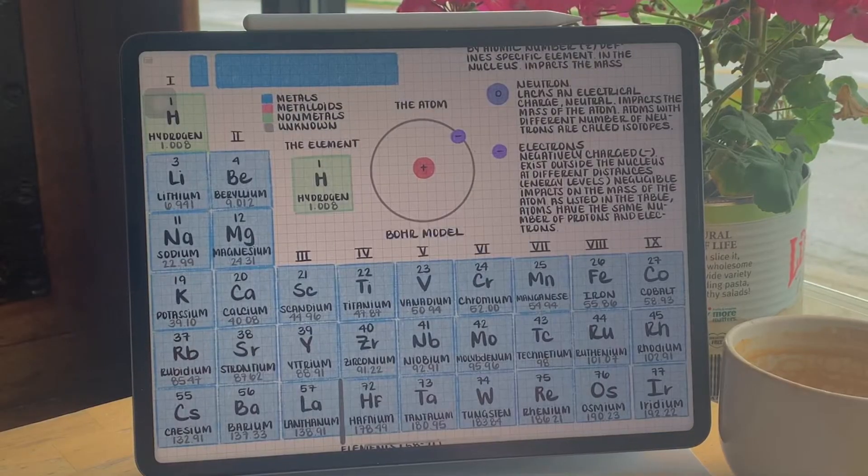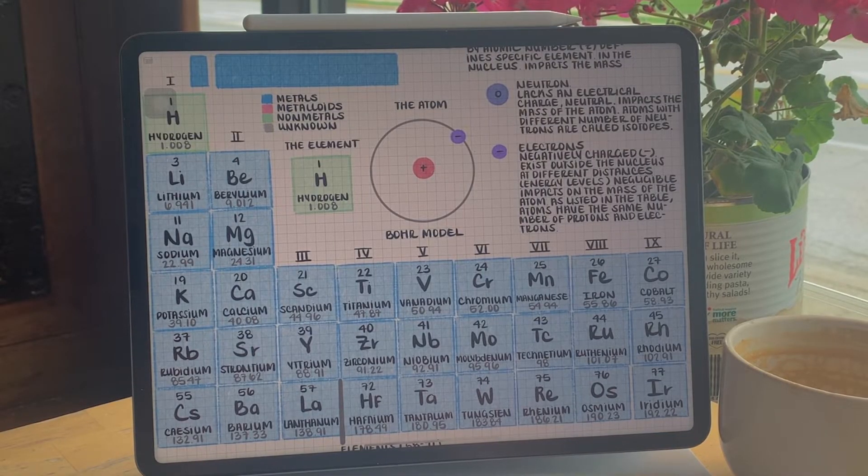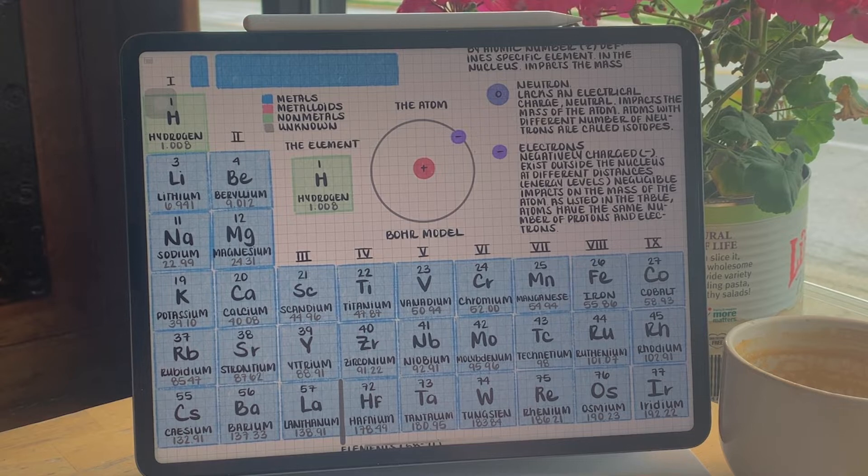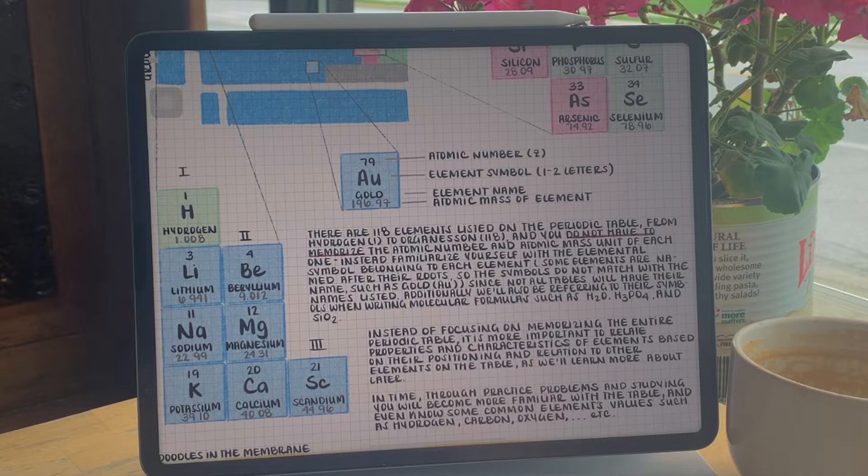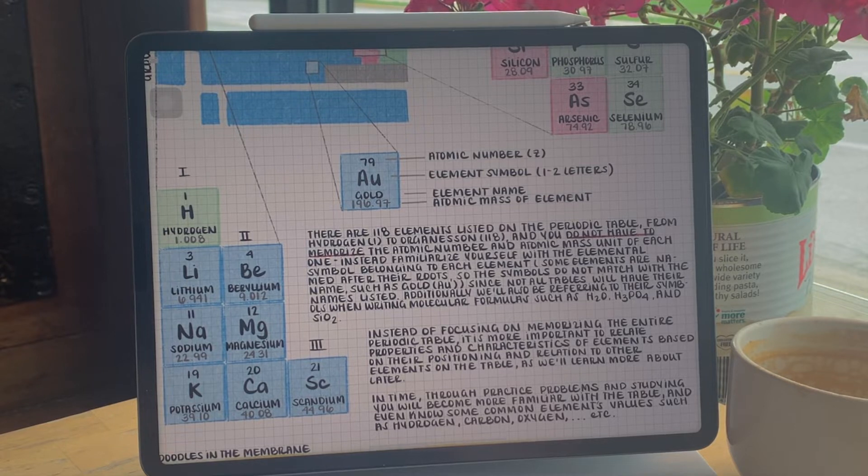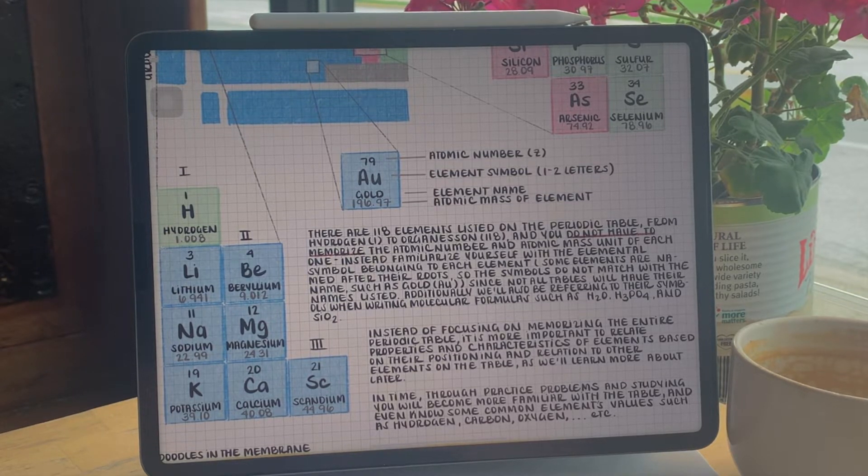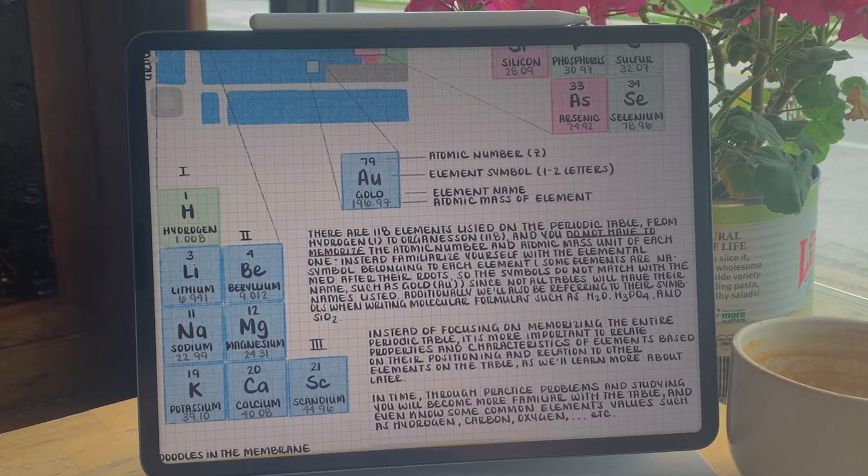There are 118 elements listed on the periodic table, and you do not have to memorize the atomic number and atomic mass unit of each one. Instead, we need to familiarize ourselves with the elemental symbol belonging to each of the elements, either one letter or a sequence of two.